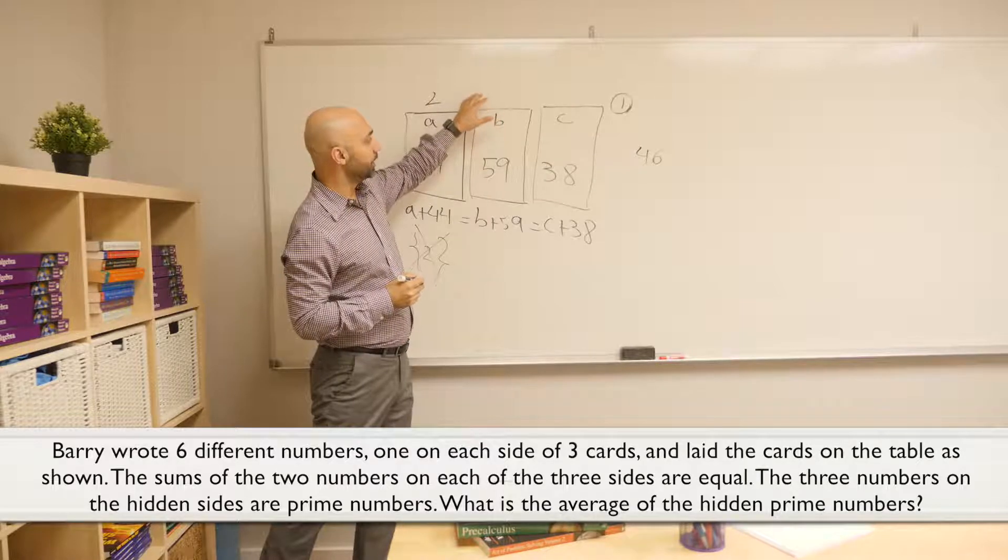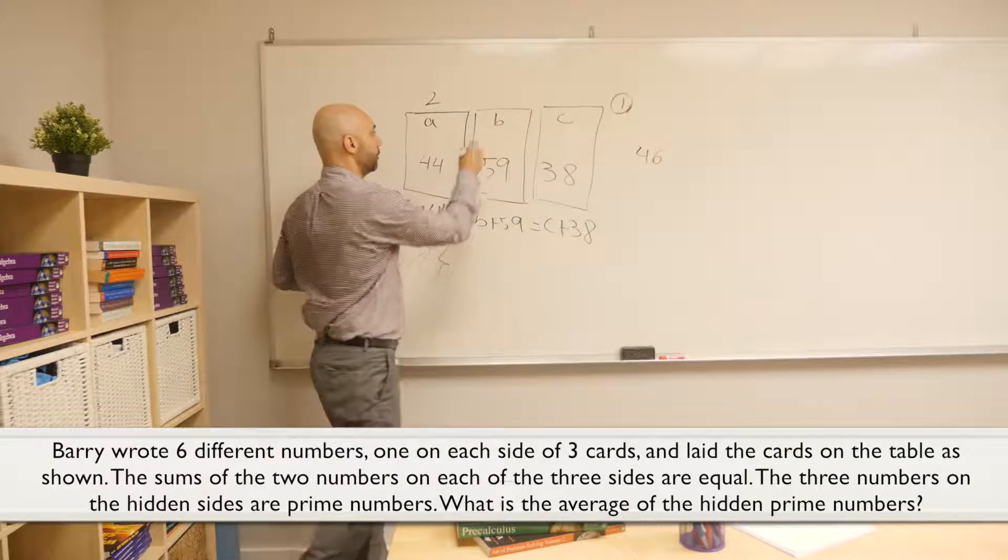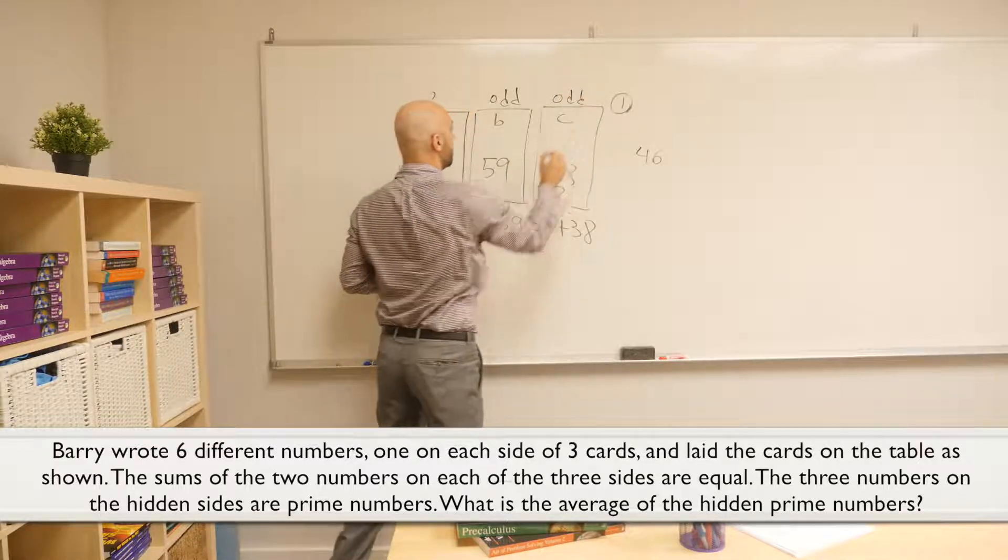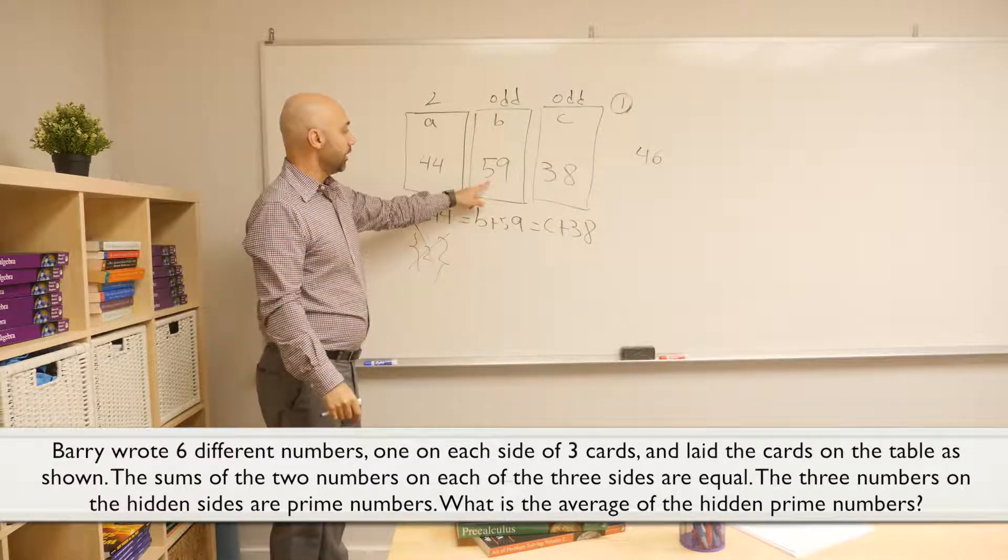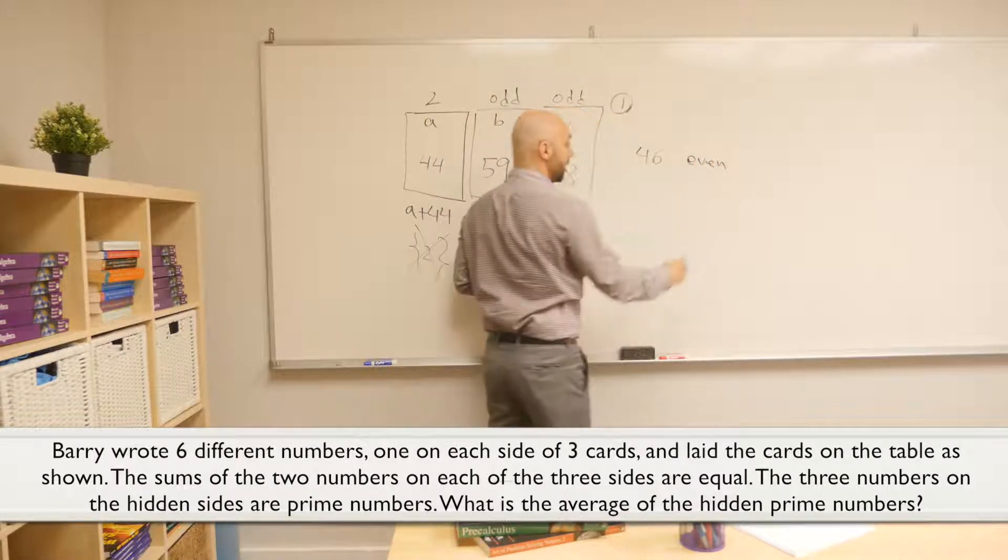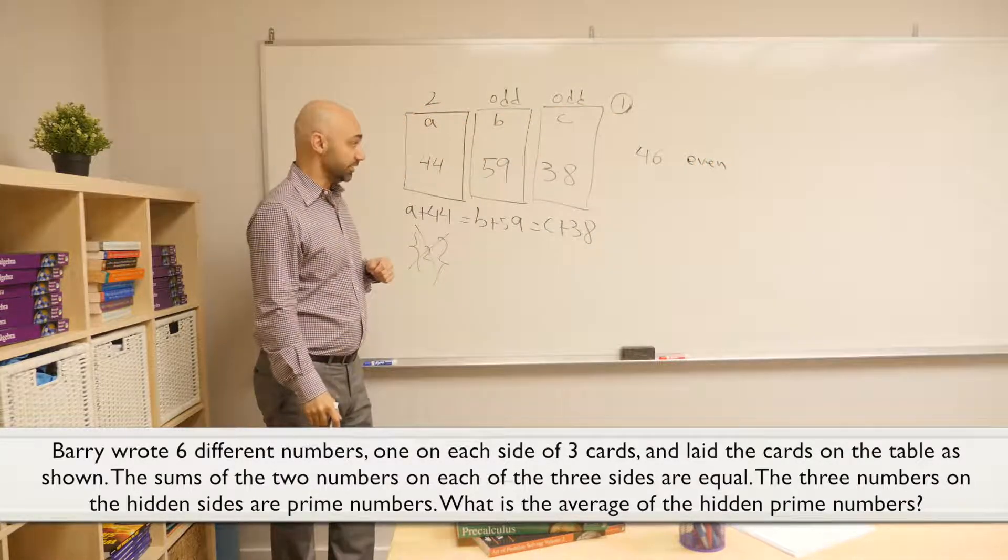If I put my odd number here, it's going to be odd also. Now, odd number plus another odd number is even, which makes sense because 46 is even also.